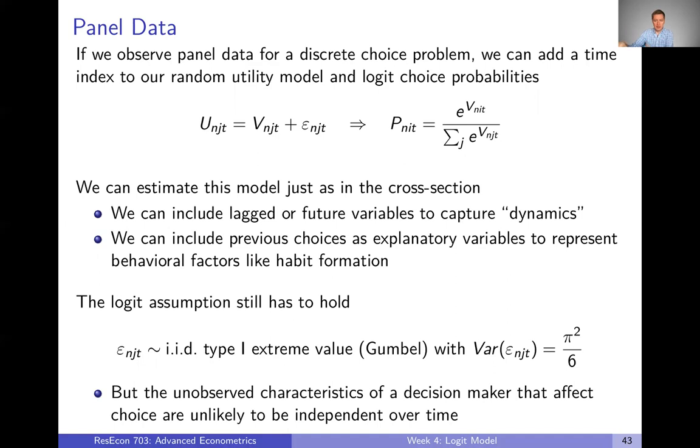There's more stuff we could think about putting into representative utility. We can include previous choices to represent things like habit formation or frictions in changing our choices. But at the end of the day, that logit assumption still has to hold. In particular, now our epsilon sub NJT has to be IID.